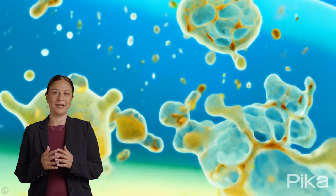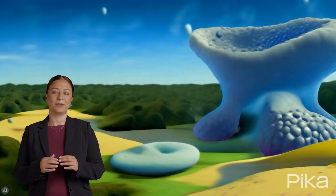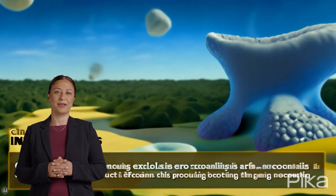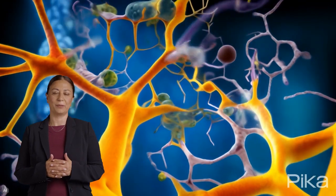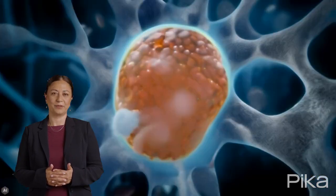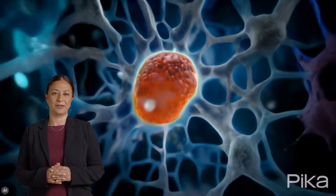Cells also maintain a dynamic relationship with their environment. The cell membrane, a phospholipid bilayer interspersed with proteins, acts as a selective barrier, controlling the movement of substances into and out of the cell.